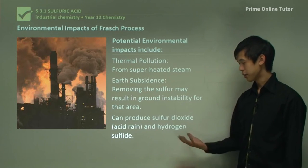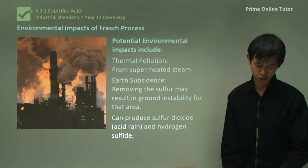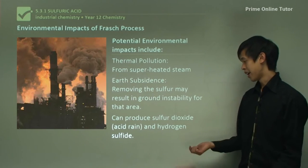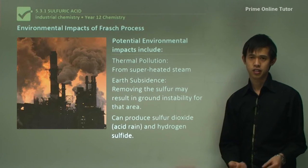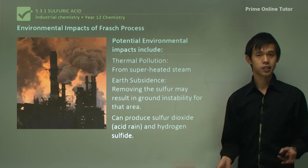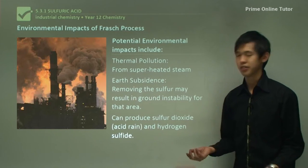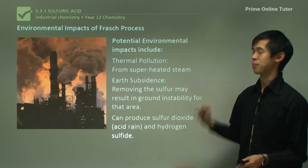We can also produce sulfur dioxide, SO2, which is a contributor to acid rain, and also hydrogen sulfide, H2S — the rotten egg smell chemical — so there can be some odor associated with this process.